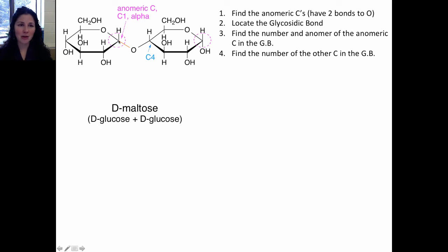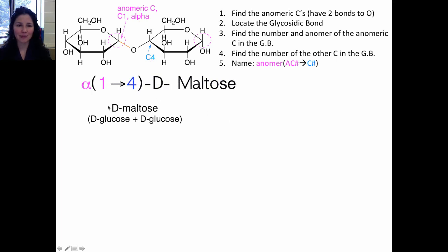The last step is to find the number of the other carbon in the glycosidic linkage — in this monosaccharide, counting carbon one, two, three, four, that carbon is carbon four. The name includes the anomer of the anomeric carbon (alpha or beta), the number of the anomeric carbon, an arrow indicating where it's attached, and the carbon number of the other monosaccharide. So I would write alpha 1 → 4, then the rest of the name. You can memorize that D-maltose is D-glucose plus D-glucose, and you should be able to identify the linkage type from the structure.